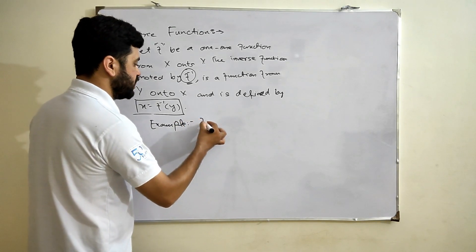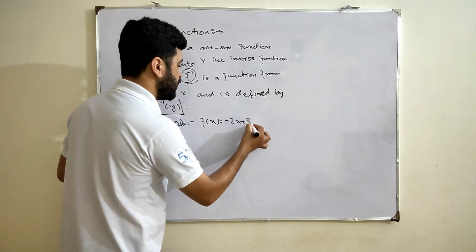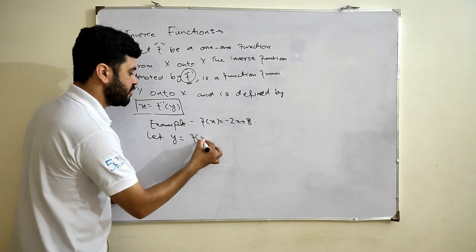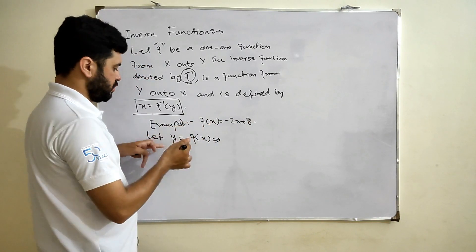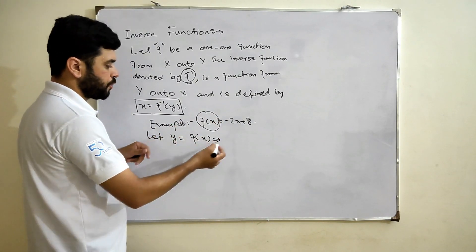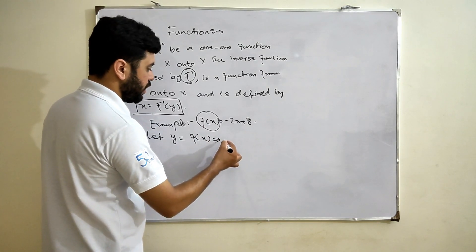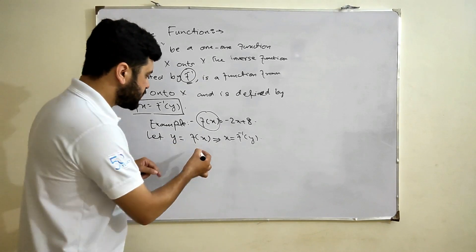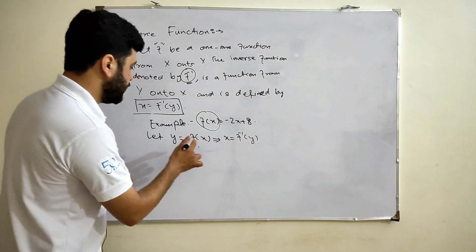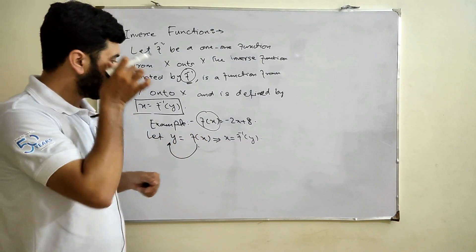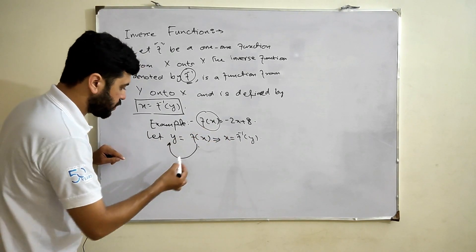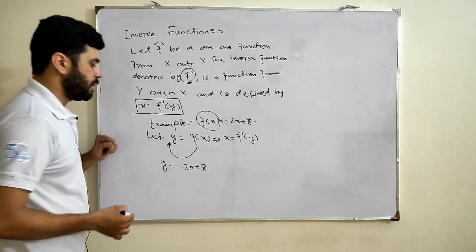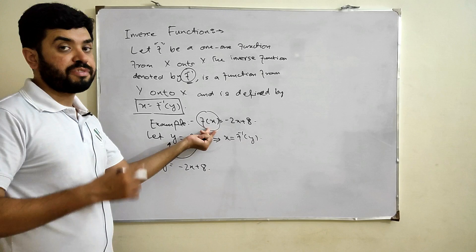Let's suppose we have a function f of x equals negative 2x plus 8. Now, let y equal f of x — writing y equals f of x means you can also write x equals f inverse of y. So y equals minus 2x plus 8, replacing f of x with y.